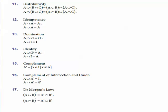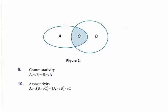First of all, we will study commutativity. Commutativity defines that if we are taking the intersection of A and B sets, then this is equal to the intersection of B and A sets.